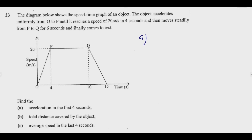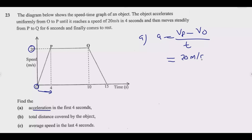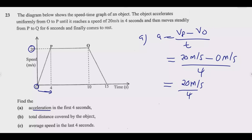The first question asks us to find acceleration. Acceleration is given by final velocity minus initial velocity over time. The final velocity is 20, the initial velocity is 0, and the change in time is 4 minus 0, which is 4 seconds. So acceleration equals 20 meters per second minus 0, divided by 4 seconds, giving us 5 meters per second squared. That gets you the one mark.